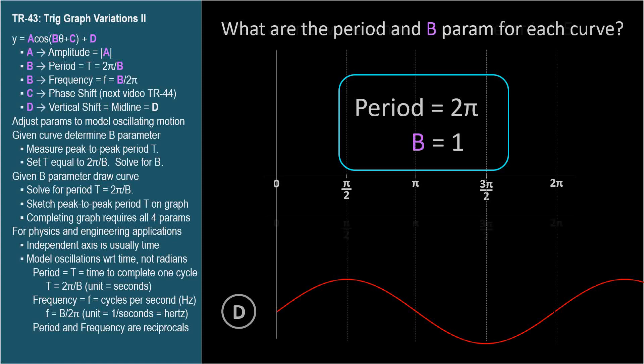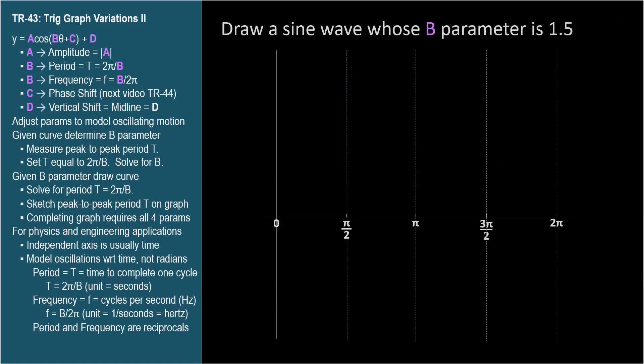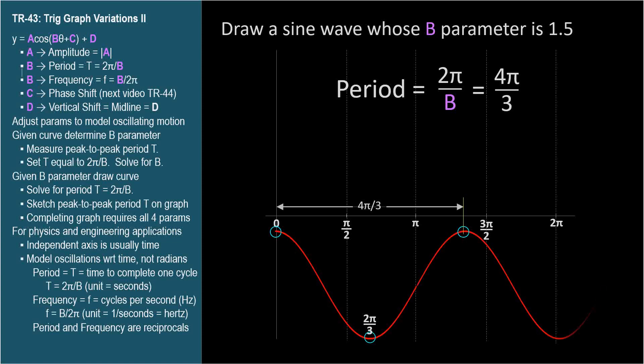Now let's draw a sine wave whose b parameter is 1.5. We're not told anything else about the curve, so we can draw whatever we want as long as the b parameter is 1.5. This means the period is 2 pi over 1.5, which is 4 pi over 3. Let's mark out a distance of 4 pi over 3 on our horizontal axis. This will be our peak to peak distance. And let's mark the points we'll use. These will be the peaks or high points of the curve. It might help to draw the curve if we knew the lowest point, which is right between these at 2 pi over 3. We'll just put it here and sketch the curve, whose period is 4 pi over 3.